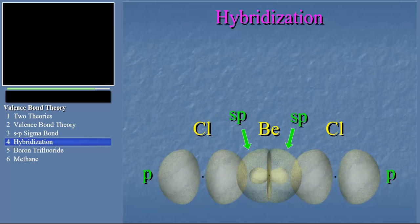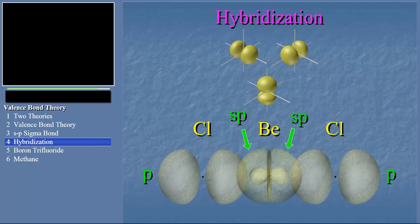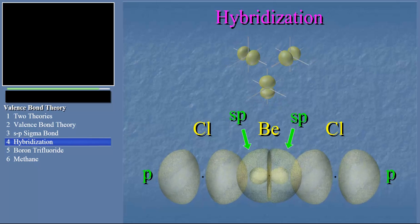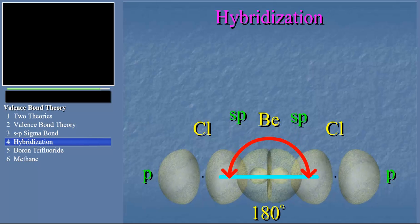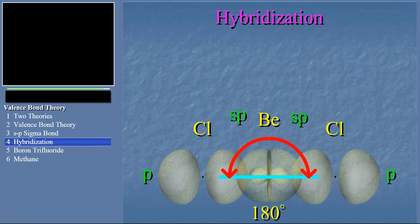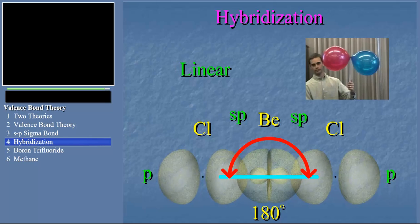The orientation in space of the two sp-type orbitals on beryllium is not arbitrary. According to the math, the sp orbitals must be 180 degrees apart. And here's the amazing thing — this correctly predicts the geometry of the beryllium dichloride molecule. What geometry would VSEPR predict for BeCl₂? Linear, right. So what's nice about the valence bond approach is that it not only shows how the bonds form, it also correctly predicts the geometry of the molecule.